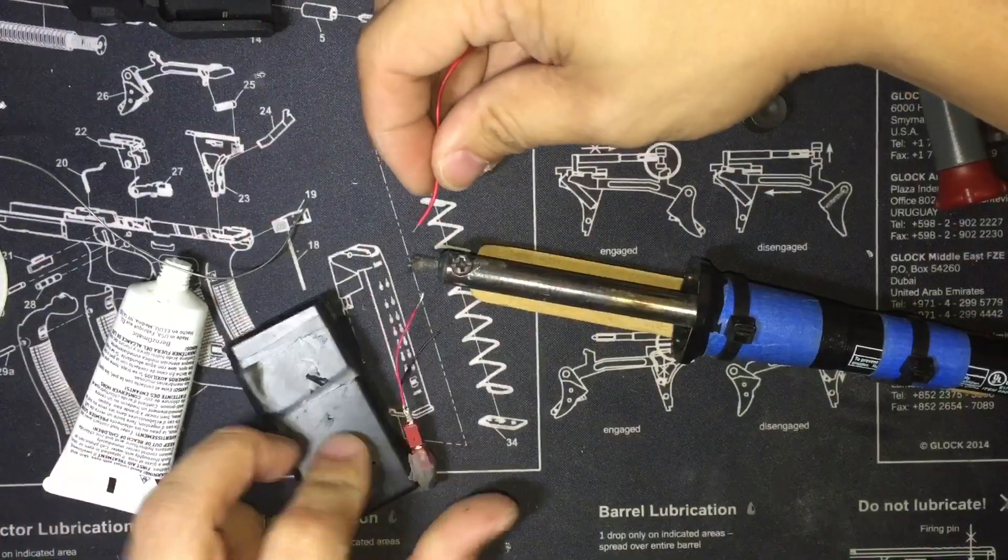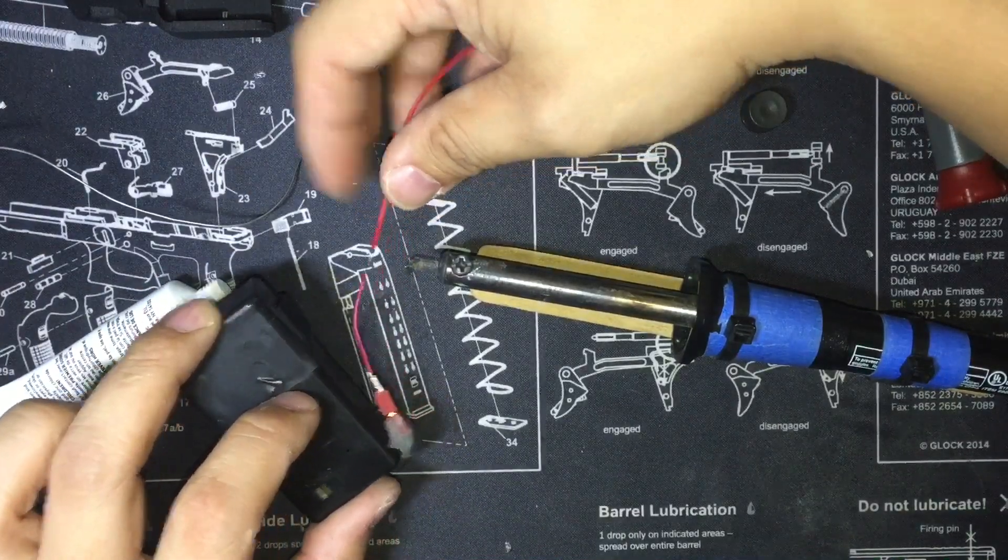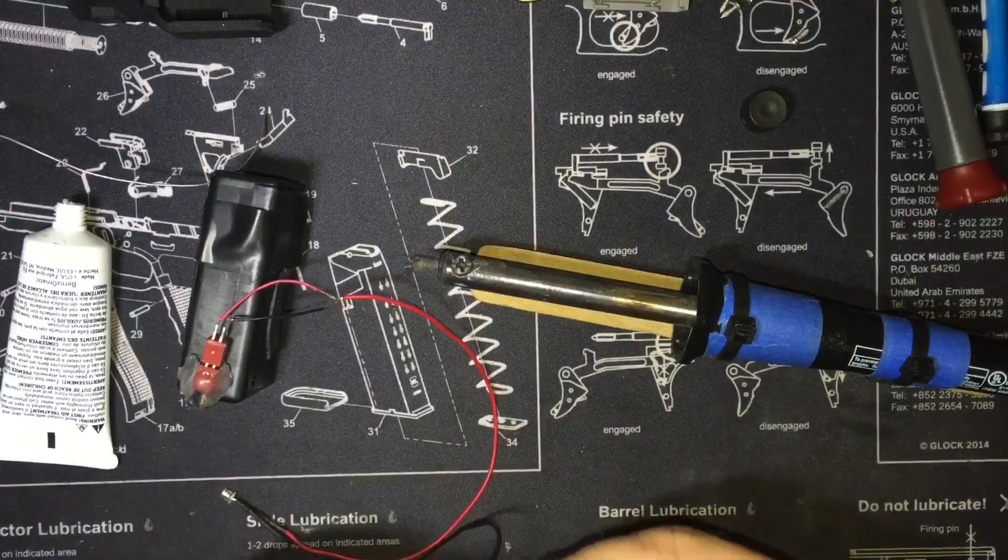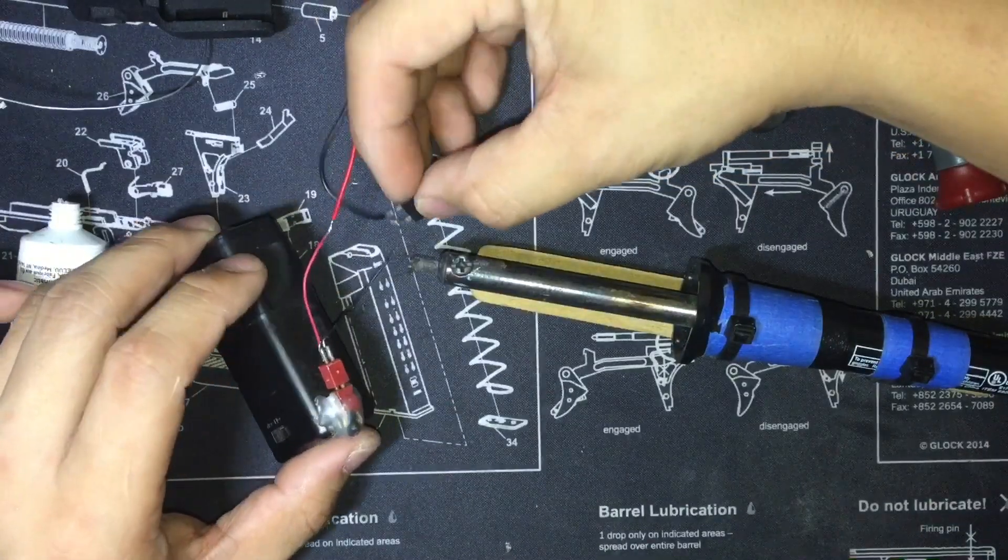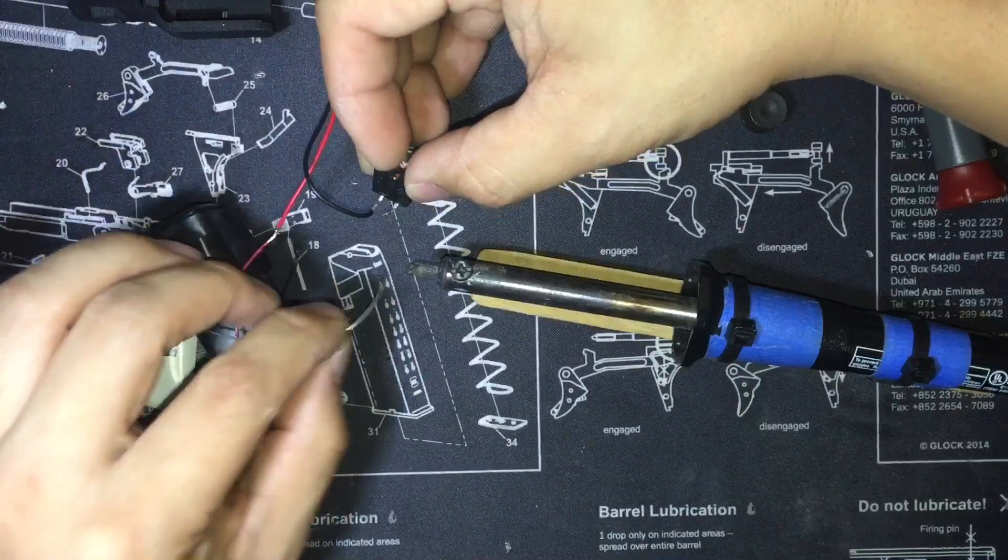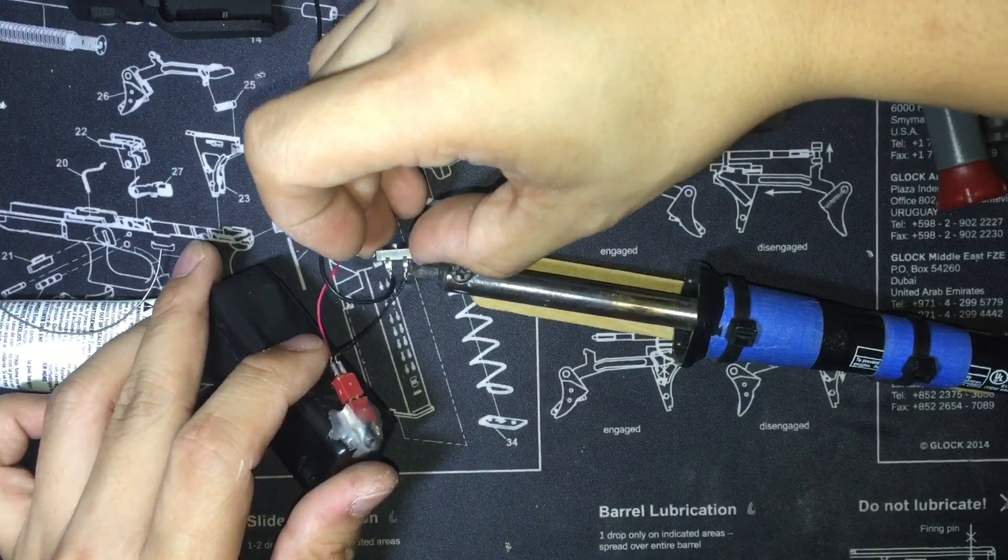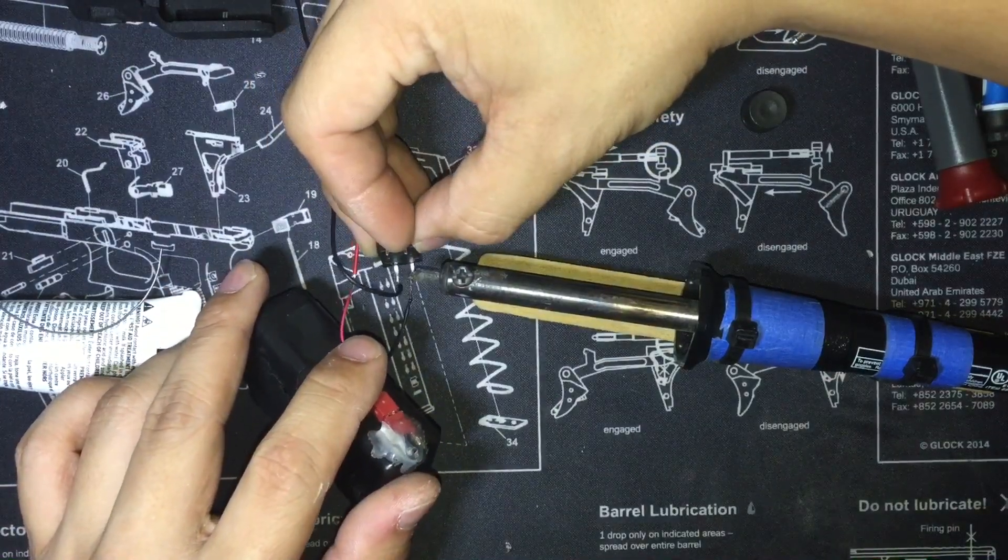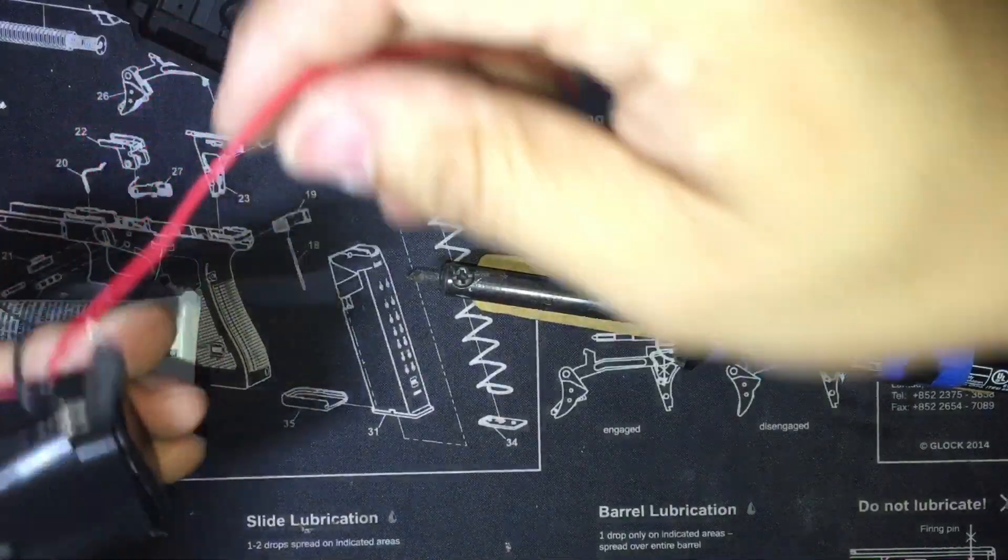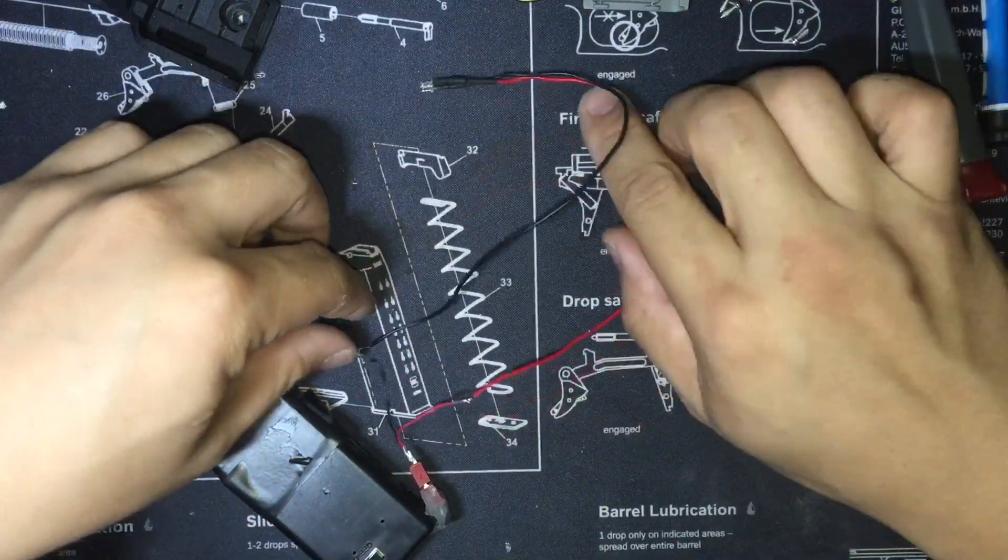I'm going to solder these two leads together. And then I'm going to solder these two leads together. All right, so that's connected. Let me get this out of the way before I burn myself. You can kind of follow everything. Now in order for this to work, this switch always has to be on.